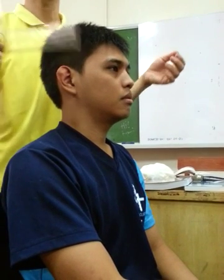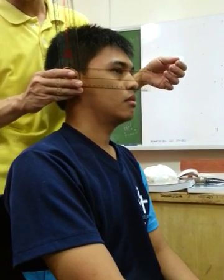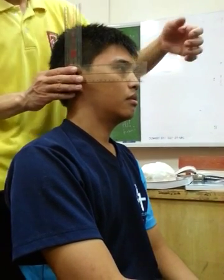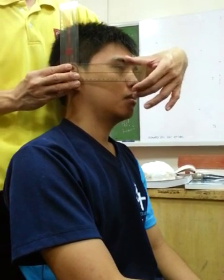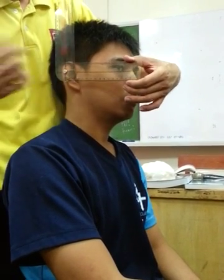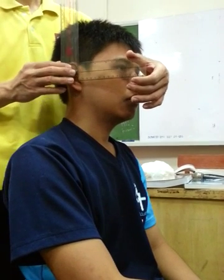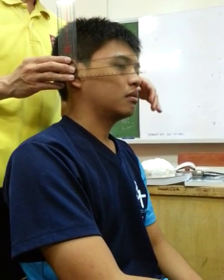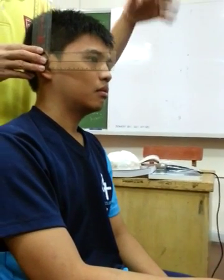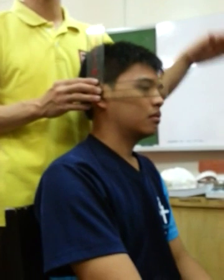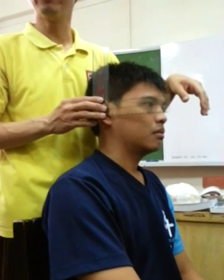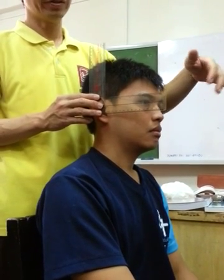Next, align the goniometer. In the practical, you just have to mention to the faculty where the fulcrum is aligned — at the external auditory meatus. Then, the proximal arm or stationary arm is in line — parallel to the ground.